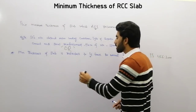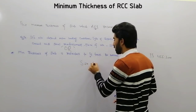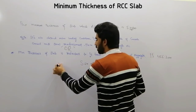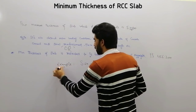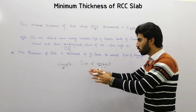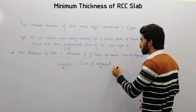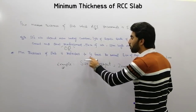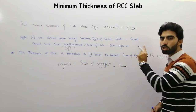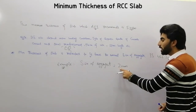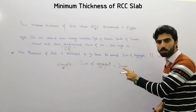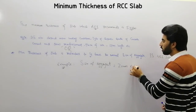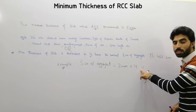For example, if the size of aggregate is 20 millimeters, you multiply by 4 — because it's 4 times the nominal size of aggregate used in the RCC slab. So the minimum thickness would be 4 times 20 millimeters, giving 80 millimeters.